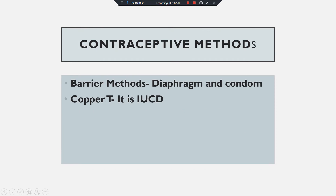Then there is the barrier method, where diaphragm and condoms are used. The copper T is also a contraceptive device — it is an IUCD, meaning intrauterine contraceptive device. These are different devices used to prevent pregnancy.